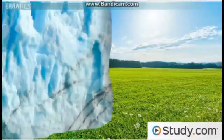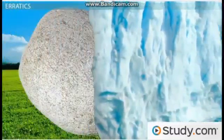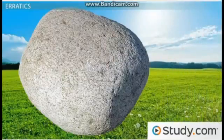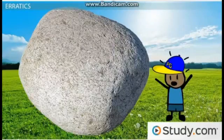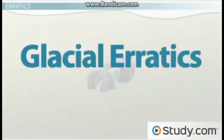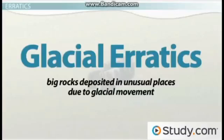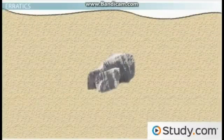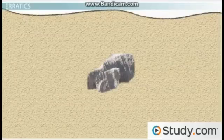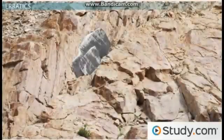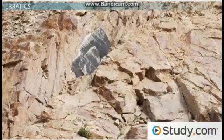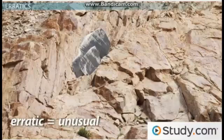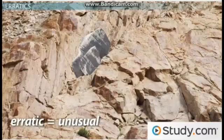Glaciers are like litter bugs because they drop materials wherever they please, sometimes leaving behind boulders so large they could never be moved by human power. These are called glacial erratics, described as big rocks deposited in unusual places due to glacial movement. For example, you could find a huge limestone boulder in an area where most of the bedrock is granite. The term erratic is used to describe something unusual — you could say erratics are big rocks deposited in erratic places.